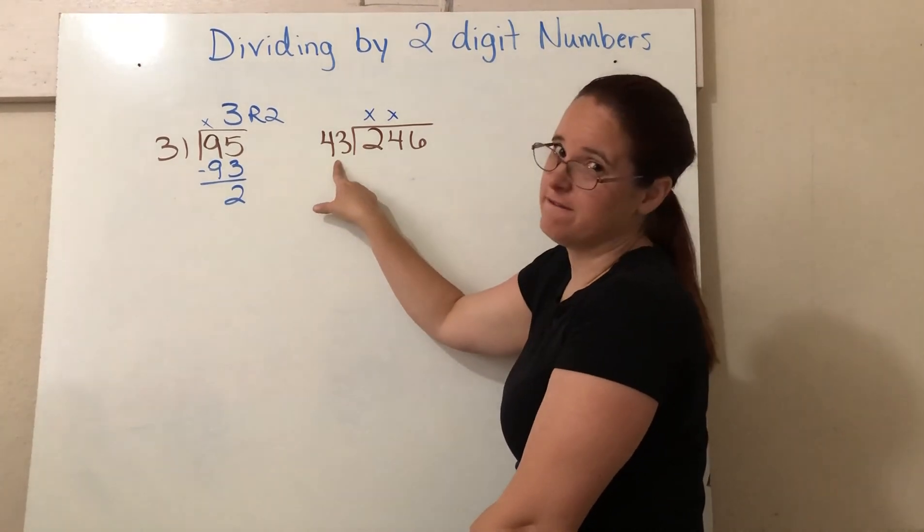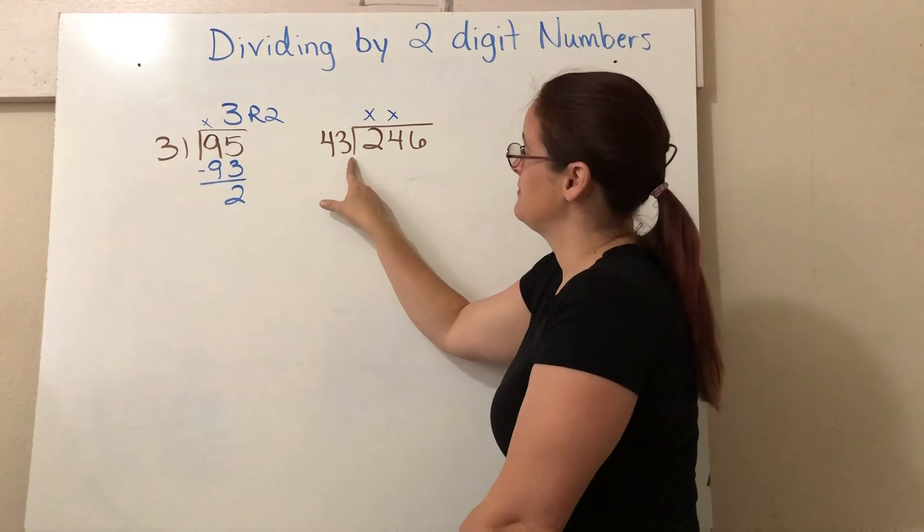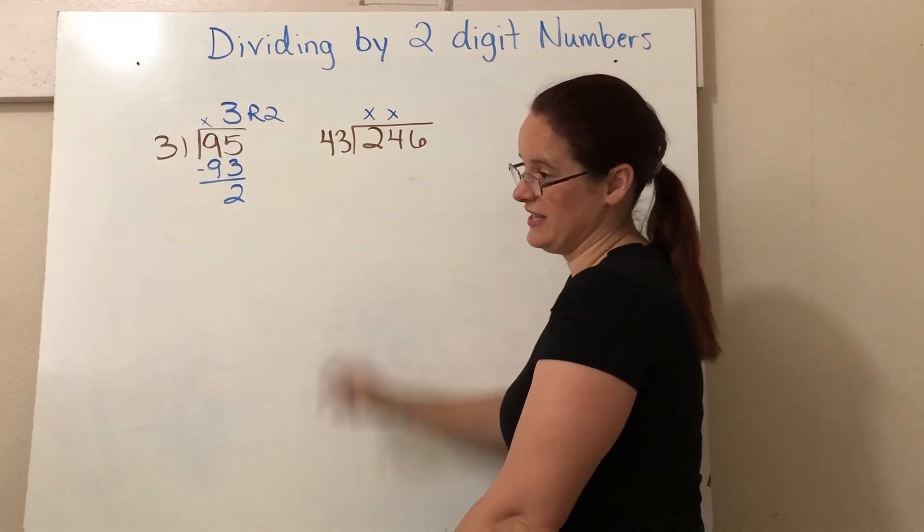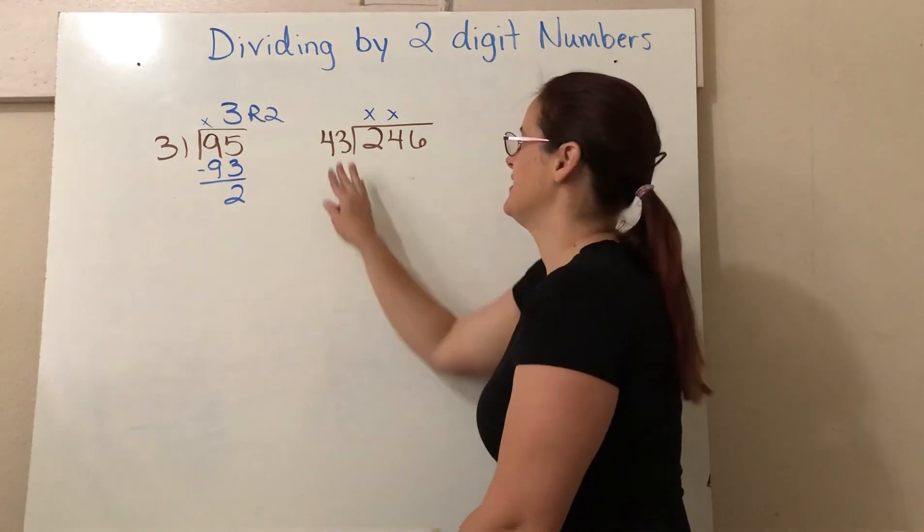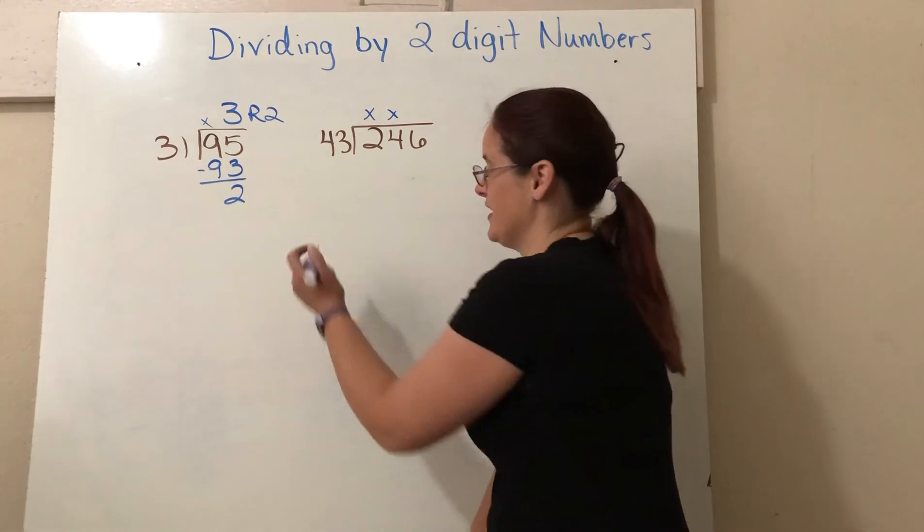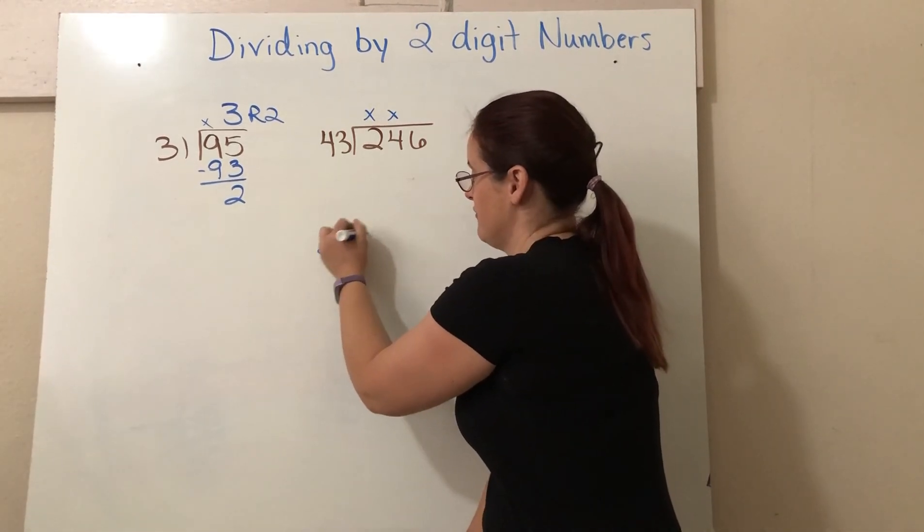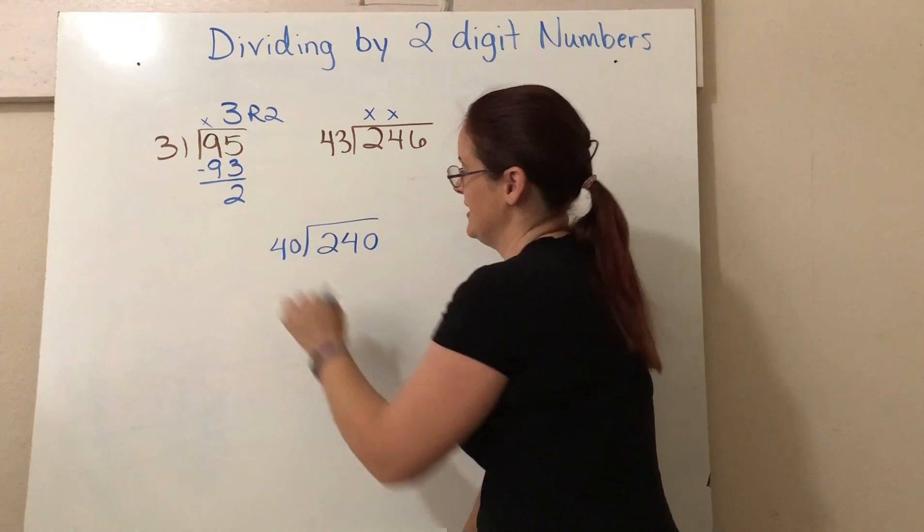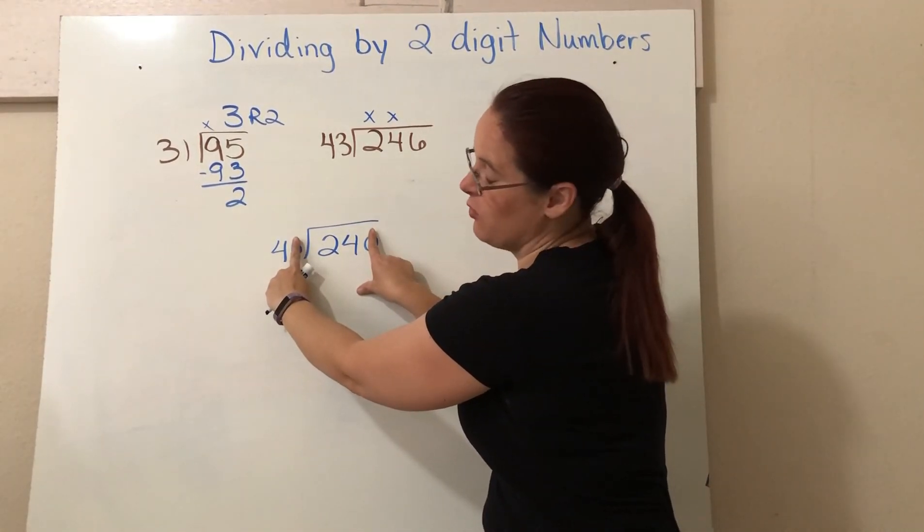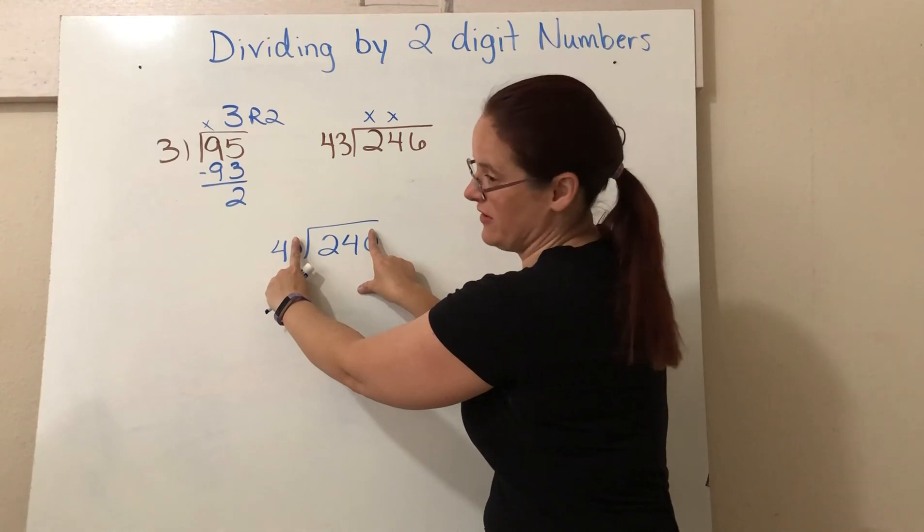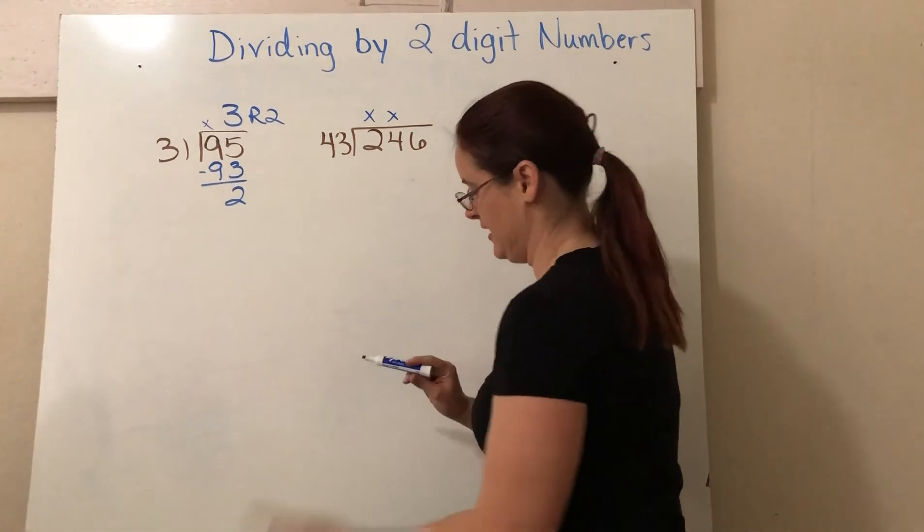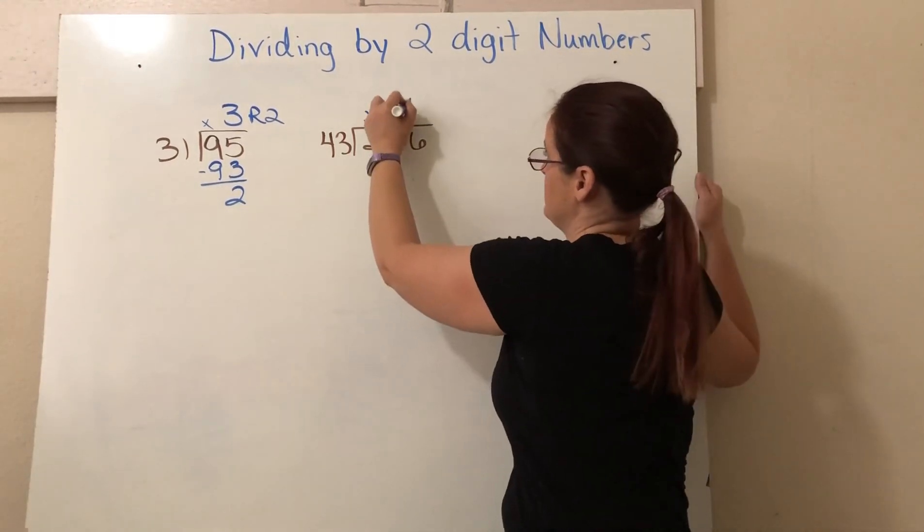I'm going to say, well, that's about 40. So how many times would 40 go into 240? So I can look at that. If I have 240 divided by 40, see my two zeros? I can ignore them and say, how many times does 4 go into 24? That would be six. That would be six times. So that's my first guess up here. I'm going to put a six.